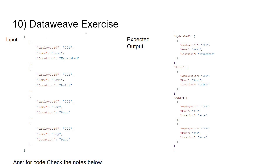The final question is a DataWeave exercise. This is the input and this is the expected output. I'll share the link to the PPT in the description of this video — you can copy the input and work on the DataWeave script to get the expected output. I have also included the DataWeave script solution in the PPT itself so you can verify your work.